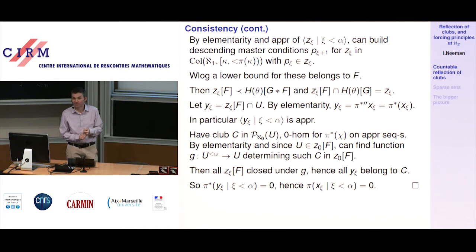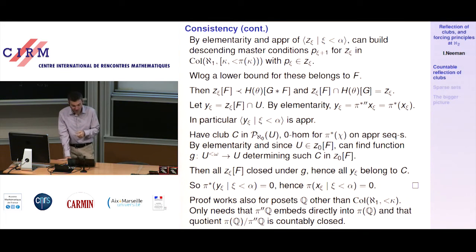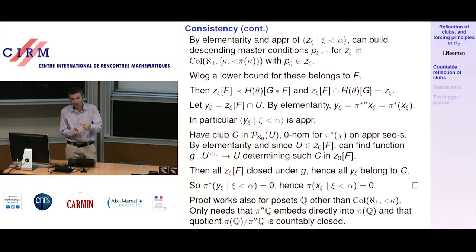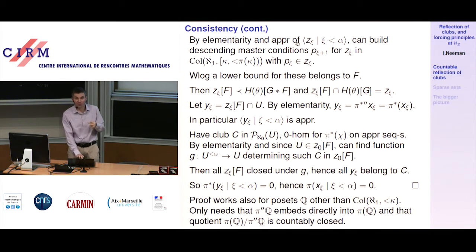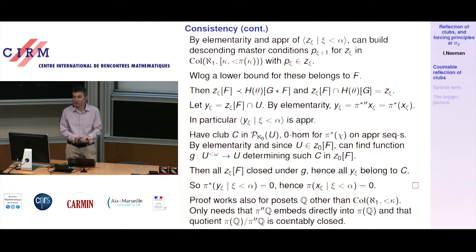One quick observation: I didn't really need to know that much about the forcing. What did we use about the initial forcing — the collapse to aleph_1 of everything less than kappa? All we use is that the pointwise image of the forcing embeds into the image of the forcing, to extend the embedding; and that the quotient forcing between pi(Q) and the pointwise image of Q was countably closed, to construct the master conditions. Just pi-image of Q embeds into pi(Q), and the quotient is countably closed — that's all we needed.